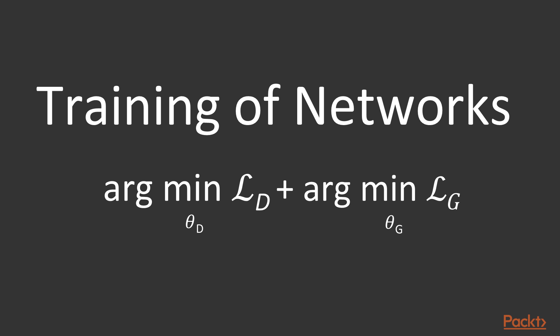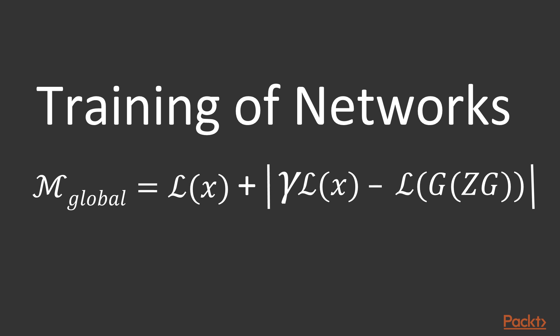Unlike most GANs, where the discriminator and generator are trained alternatively, BGAN allows simultaneous training of both networks in an adversarial way at each time step. Finally, it allows an approximate measure of convergence M to understand the performance of the whole network. In this video, we have introduced Conditional GAN.